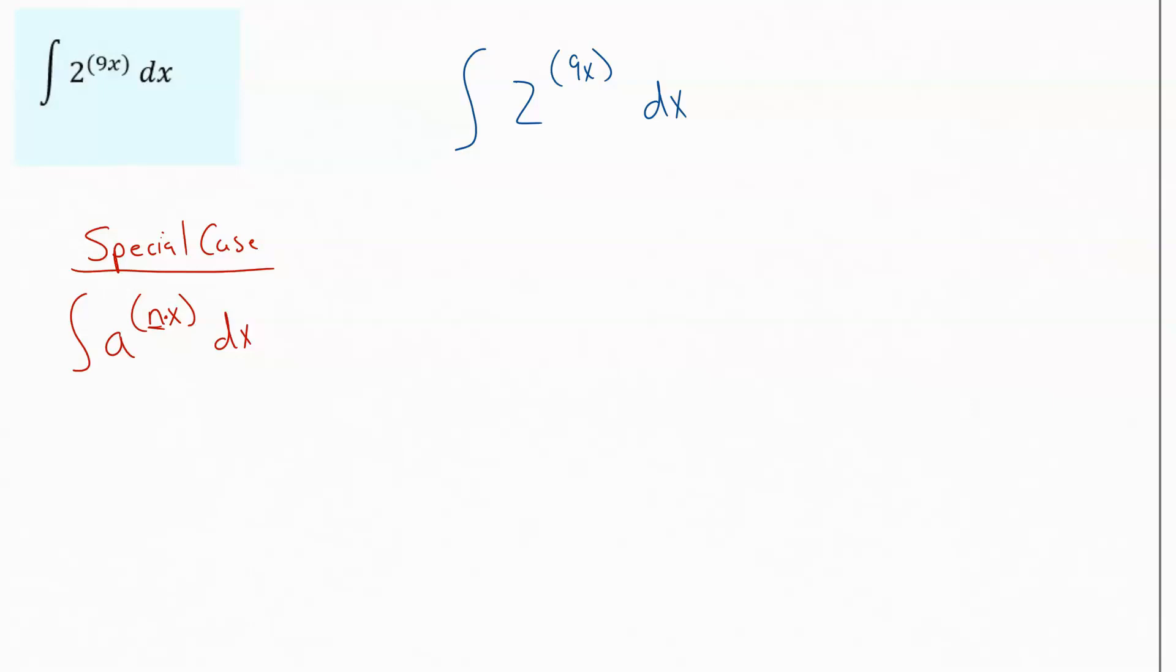So the special case for this always works out to be 1 over whatever that number is inside there, times 1 over the natural log of our base (whatever that a value is), and then times a to the nx. That piece stays the same. And then we always put a plus c.